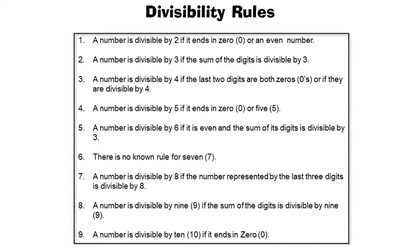So I have these rules here and it says divisibility rules. A number is divisible by two if it ends in zero or an even number. Another number is divisible by three if the sum of the digits is divisible by three. And there's others on here. You can freeze the frame and go over it.